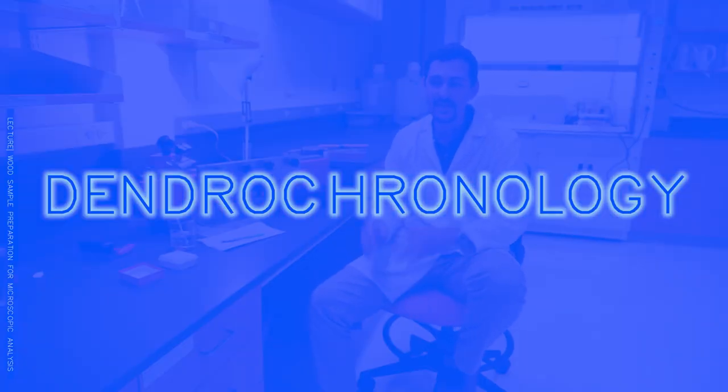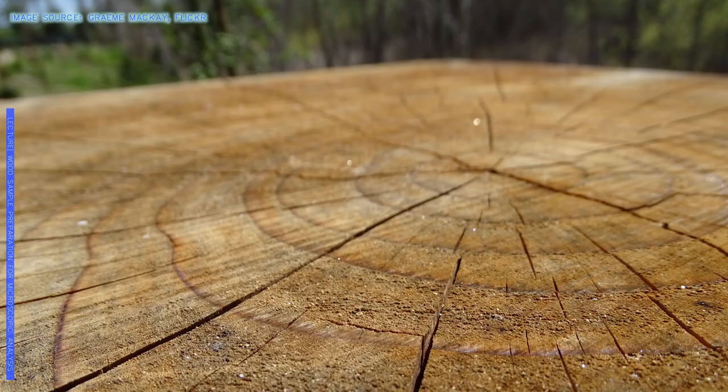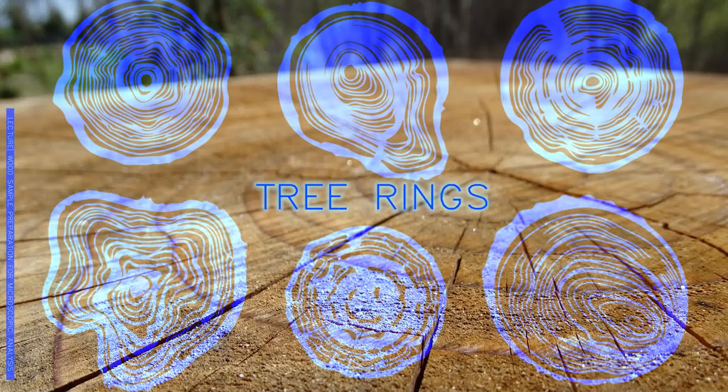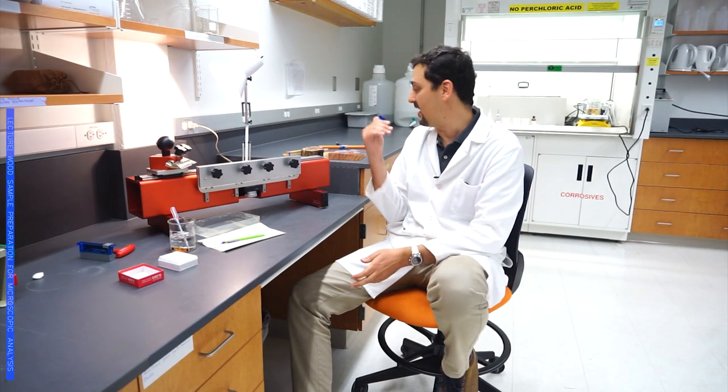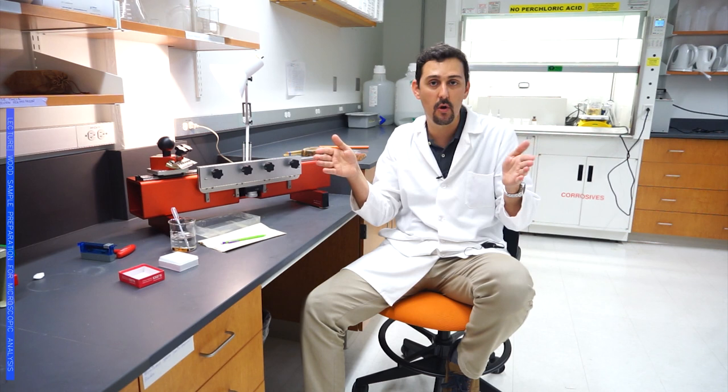Dendrochronology is the broader part of this science when we are using the tree rings to put the information that the wood gives us on a time context. The classic approach is by using increment borers to get samples from the trees, and by sanding these samples we are able to make the tree rings very clear, and under a microscope we will be measuring every single tree ring.